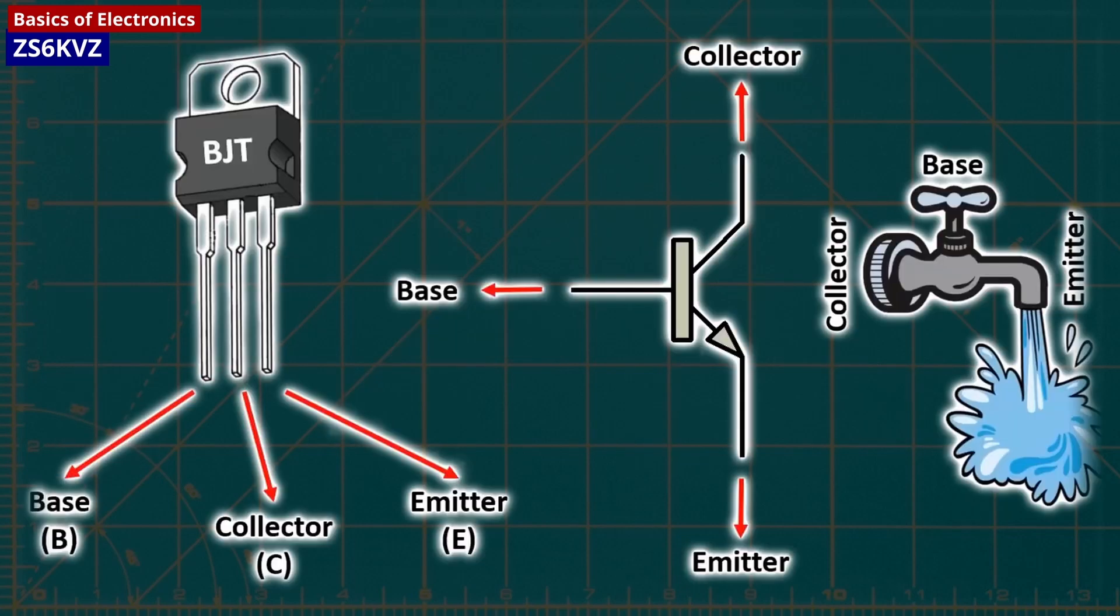The transistor's part number is printed on it, and datasheets can be looked up online to learn about its pin layouts and specific properties, including its voltage and current rating.